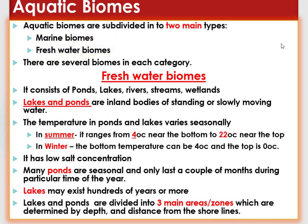Let us see freshwater biomes. Freshwater biomes are one of the aquatic biomes that have less salt content. They consist of ponds, lakes, rivers, streams, and wetlands. Lakes and ponds are inland bodies of standing or slowly moving water.